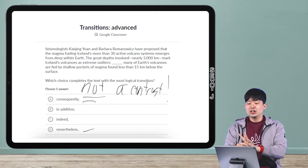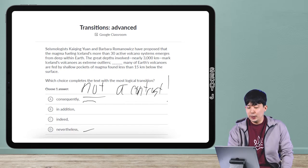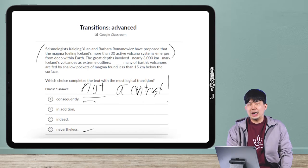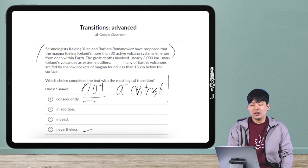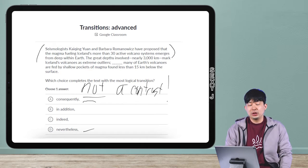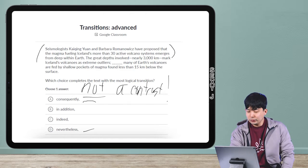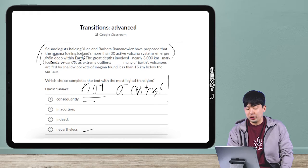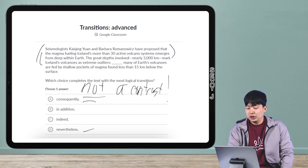Let's look at this idea. These seismologists have proposed something about these volcanoes - that the magma comes from deep within the earth. The great depths involved mark Iceland's volcanoes as extreme outliers. Many of Earth's volcanoes are fed by shallow pockets of magma found less than 15 kilometers below the surface.